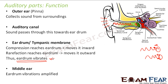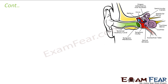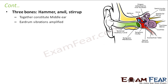Then comes the middle ear. The middle ear amplifies the eardrum vibrations. It has three bones — malleus, incus, and stapes — which together amplify the vibrations. The sound waves create only small vibrations in the eardrum, but these three bones of the middle ear increase and amplify those eardrum vibrations significantly.